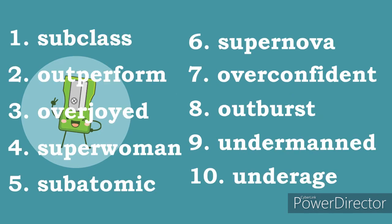Here are the correct answers to exercise one. Number 1: subclass. Number 2: outperform. Number 3: overjoyed. Number 4: superwoman. Number 5: subatomic. Number 6: supernova. Number 7: overconfident. Number 8: outburst. Number 9: undermanned. Number 10: underage.